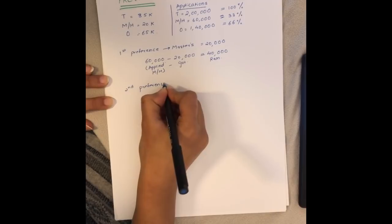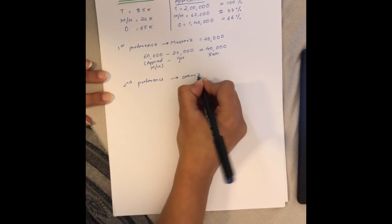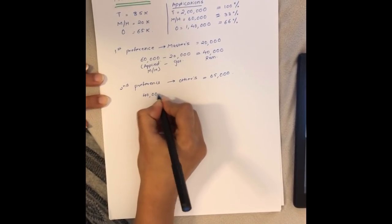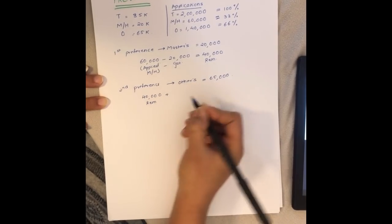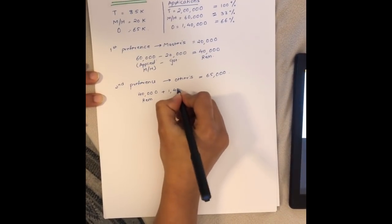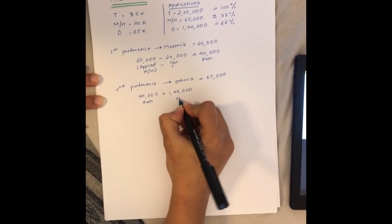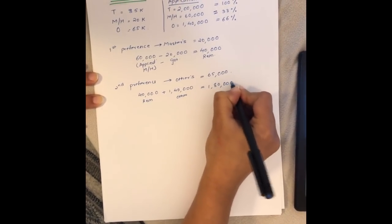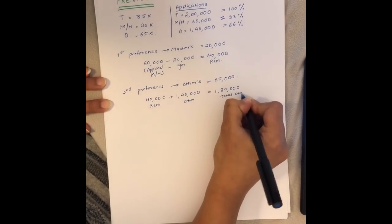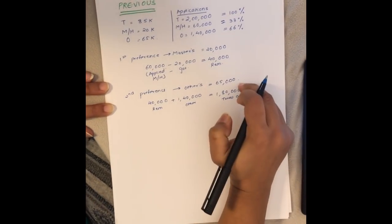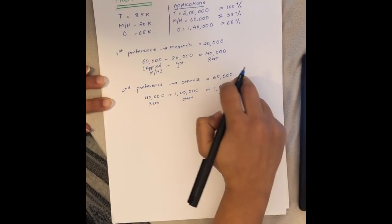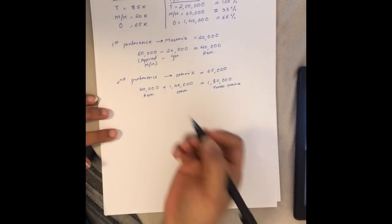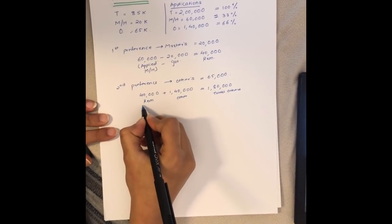These 40,000 would now go into the second preference which is for others, where you have the slot for 65,000. So now 40,000 from the masters which are remaining, plus the others which is the total of 1 lakh 40,000 (140,000), would total up to 1 lakh 80,000 (180,000) total applicants for the other category.